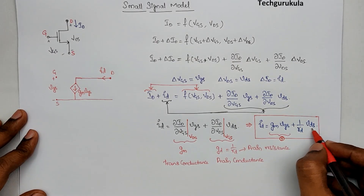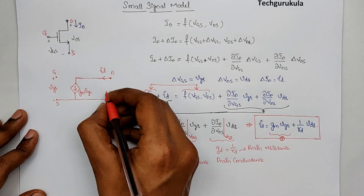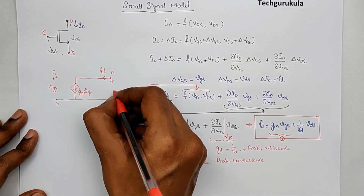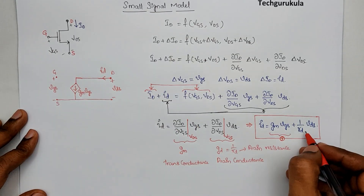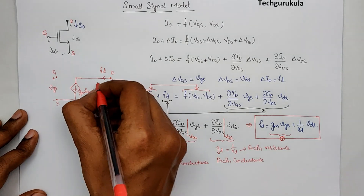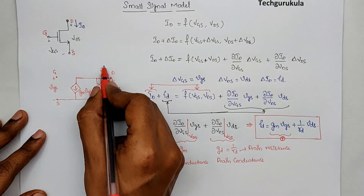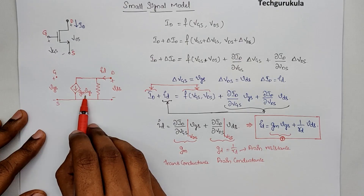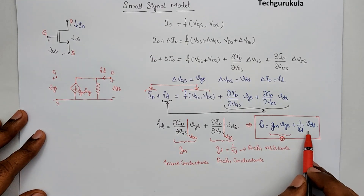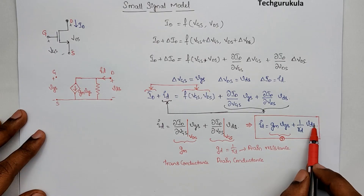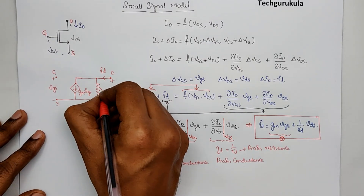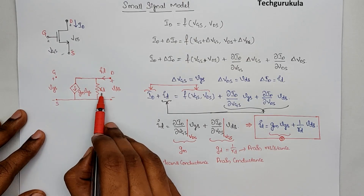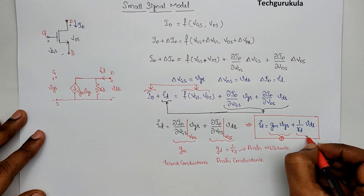The source terminal is common, so the potential between drain and source is vds. Taking the drain resistance RD in parallel with the current source, the total id splits: one part is GM times vgs, and the second part is the current through RD, which is vds over RD. That second term matches the second term in our equation. This is the low-frequency small-signal model of a MOSFET.